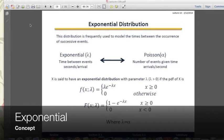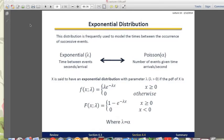Now we are going to talk about the exponential distribution. This distribution is used to model the times between the occurrence of successive events. That's the main difference between the Poisson distribution and the exponential distribution, because Poisson distribution usually measures the number of events in a given time, which is the arrivals per second.